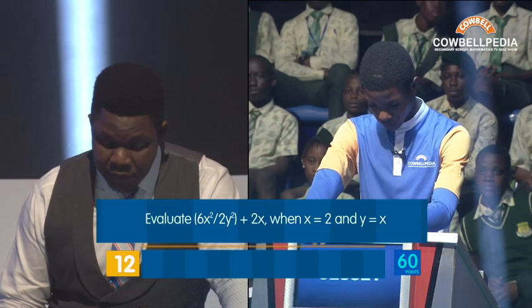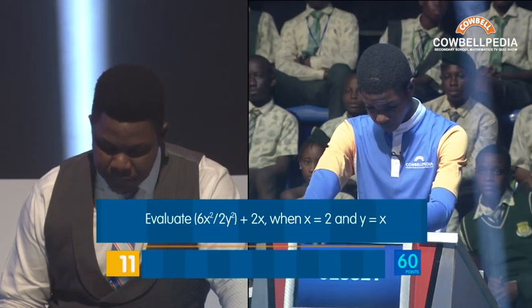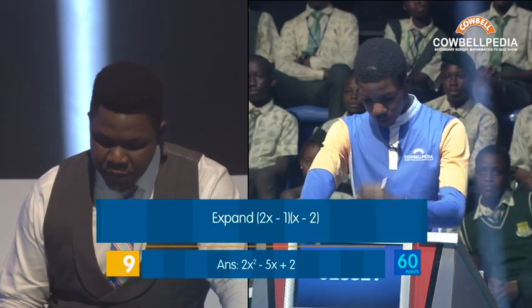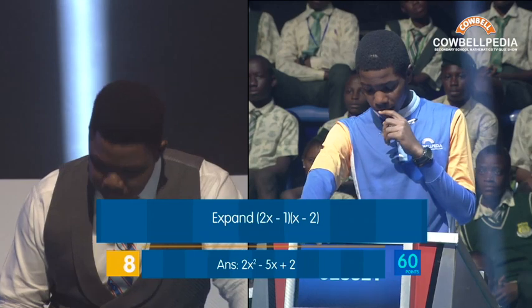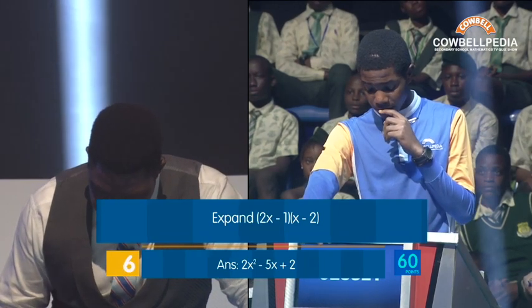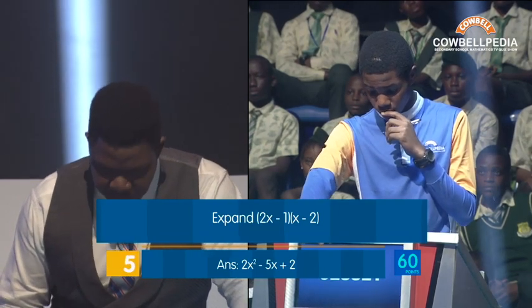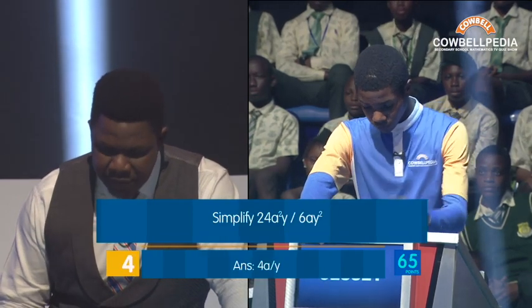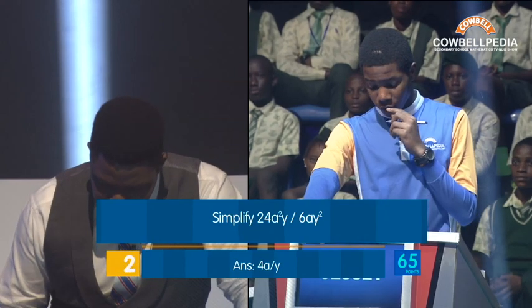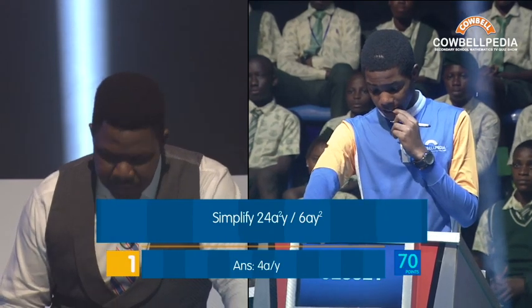Evaluate 6X squared over 2Y squared plus 2X. Expand 2X minus 1 — 2X squared minus 3 — 2X squared minus 5X plus 2. Correct. Simplify 24A squared — 4A over Y. Correct. Well done.